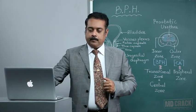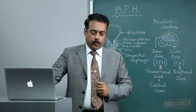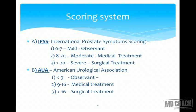Now depending on the symptoms, there are scoring systems available. There are two broad scoring systems: IPSS and AUA. IPSS is the International Prostate Symptom Scoring System, which classifies the clinical severity into three zones: mild, moderate, and severe. A score of 0 to 7 is considered mild. The importance of knowing the scoring system is that we can plan our treatment option for the patient.